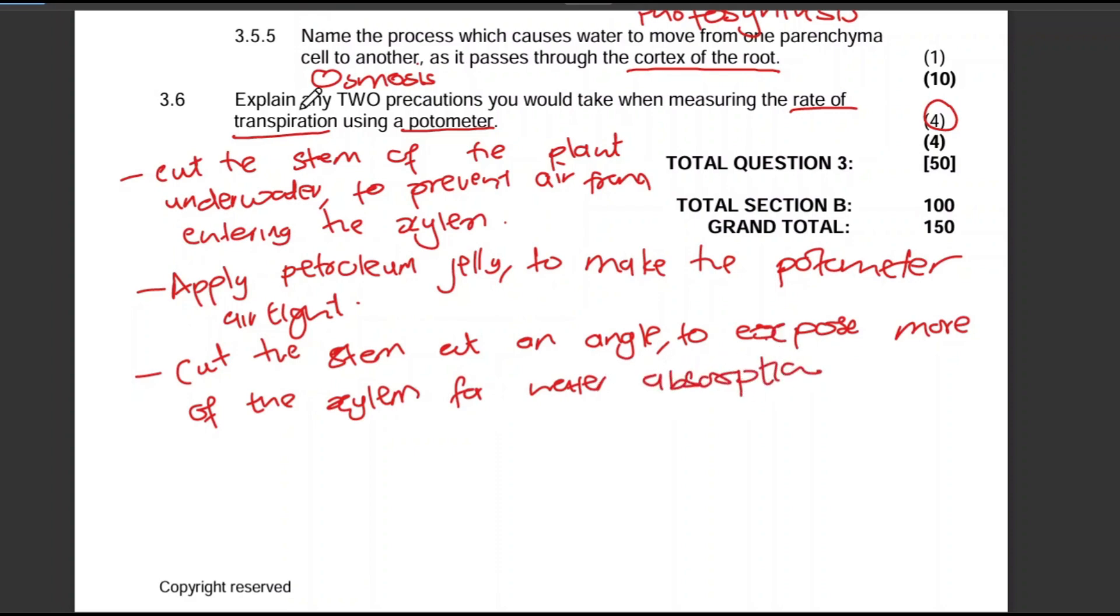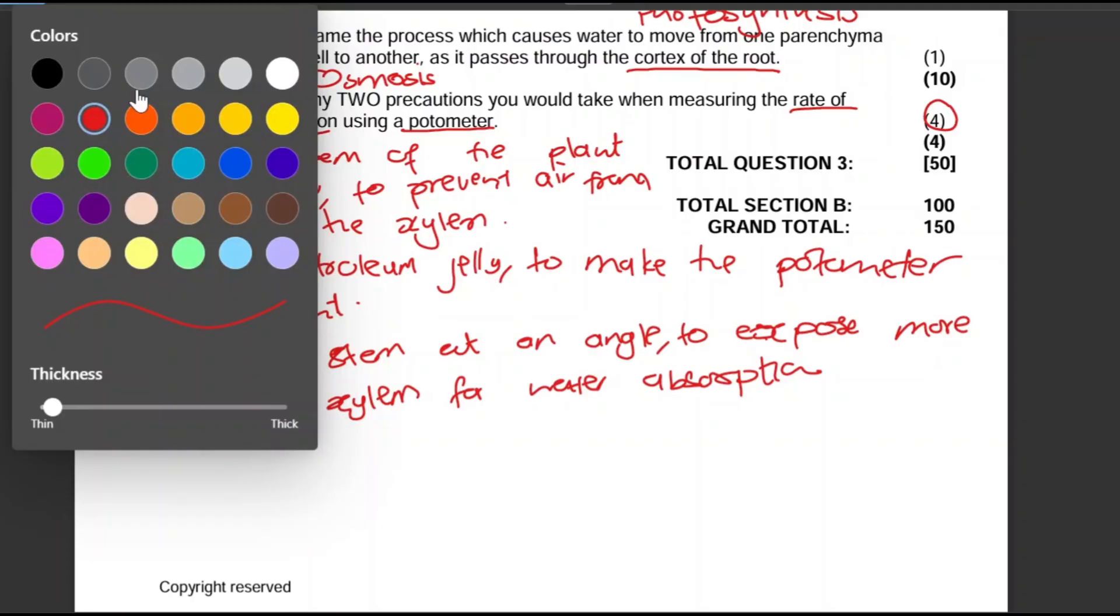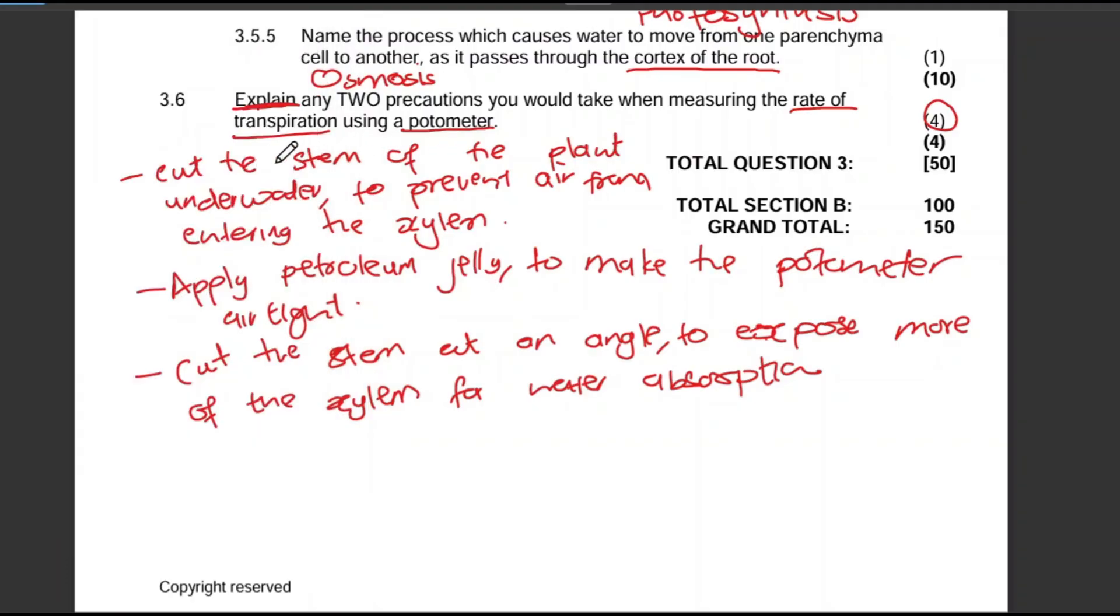I'm going to show you how this is marked. In an explain question, one sentence or one cause and effect will grant you two marks. One precaution here: since we're explaining, you cut the stem of the plant underwater - why are we doing that? That's the second mark. What are we doing? Applying petroleum jelly. Why are we applying it? To make the potometer airtight. Another thing: what should we do? Cut the stem at an angle. Why? To expose more of the xylem for water absorption. All the best for your test and exam. Thank you.